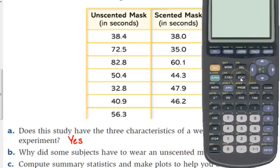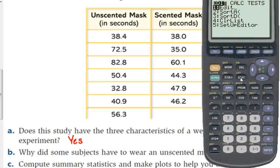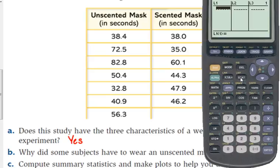On your calculator, there is a button right beside your left arrow that says STAT, and that stands for Everything Statistics. You've probably used this more in other contexts before, but we do want to put data in here, so under the edit menu, we're just going to press enter for edit. Put in the data for the unscented mask in list 1, and for the scented mask in list 2.